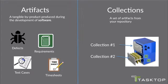Let's start with artifacts and collections. Artifacts are the tangible byproducts produced during the development of software. Key artifacts are things like defects, stories, requirements, test cases, even things like timesheets. A collection at its simplest level is simply a set of artifacts from your repository. I often liken collections to thinking of a drawer in a file cabinet with your artifacts inside.